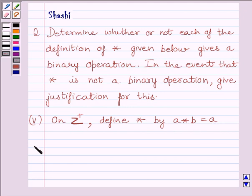Let us now start the solution. We are given A star B equals A. We have to find if star is a binary operation on Z+, where Z+ is the set of all positive integers.